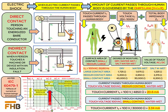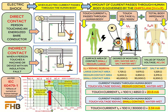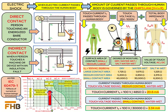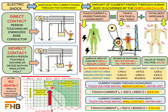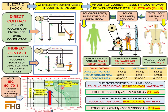The chart is divided into four zones: AC1, AC2, AC3, and AC4. For zone AC2, there may be involuntary muscular contraction but usually no harmful electrical physiological effects. For zone AC3, strong involuntary muscular contraction, difficulty in breathing, reversible disturbances of heart function, and immobilization may occur, with effects increasing with higher current magnitude. For zone AC4, severe effects may occur such as cardiac arrest, breathing arrest, burns, or other cellular damage.